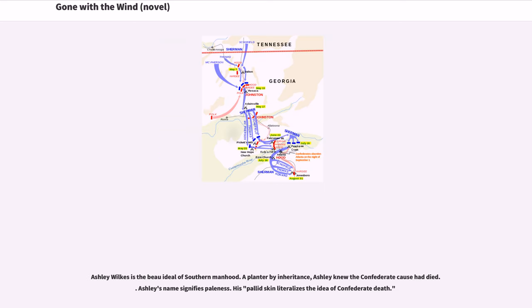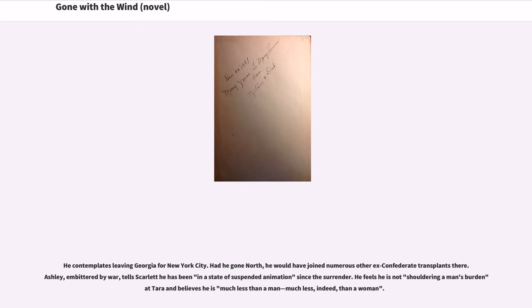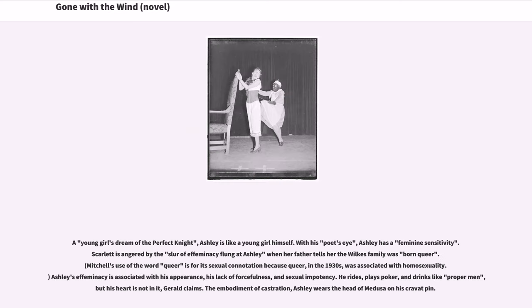Ashley Wilkes is the beau ideal of Southern manhood. A planter by inheritance, Ashley knew the Confederate cause had died. Ashley's name signifies paleness, and his pallid skin literalizes the idea of Confederate death. He contemplates leaving Georgia for New York City. Ashley, embittered by war, tells Scarlett he has been in a state of suspended animation since the surrender. He feels he is not shouldering a man's burden at Tara and believes he is much less than a man — indeed, than a woman. With his poet's eye, Ashley has a feminine sensitivity.